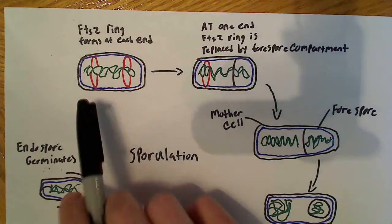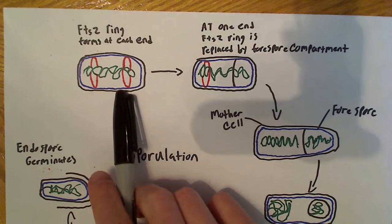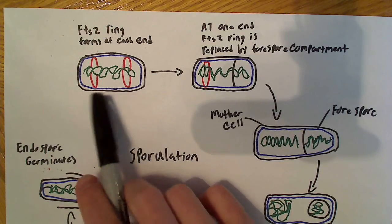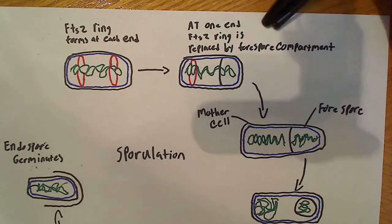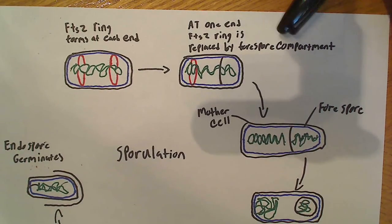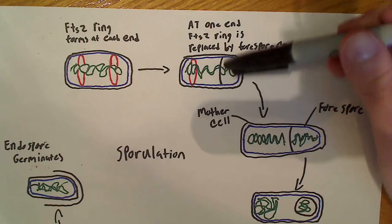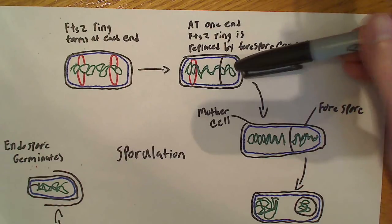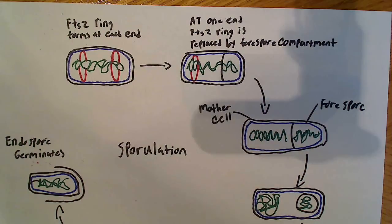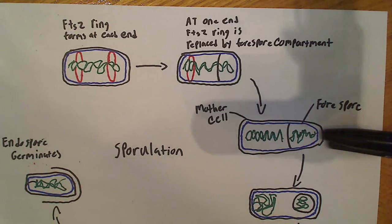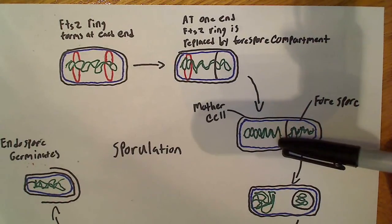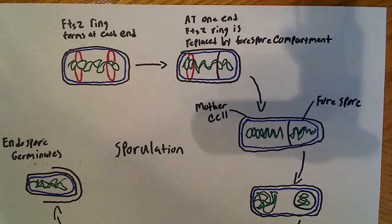So in this sort of stage one up here, we see the FtsZ rings are forming at the poles. And at one end, the FtsZ ring is then going to be replaced with the forespore compartment. So we're separating this off here. We end up with a forespore compartment and a mother cell. And you can see in this stage here, here's the forespore, here's the mother cell, and they're now separated.